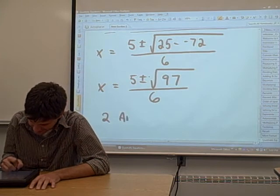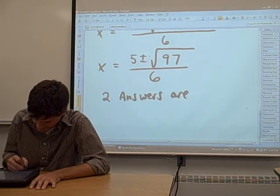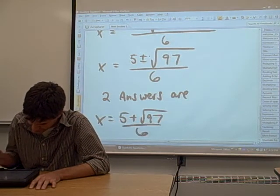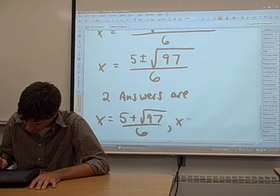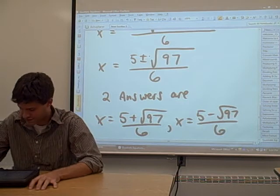So our two answers are x equals 5 plus the square root of 97 over 6, and x equals 5 minus the square root of 97 over 6.